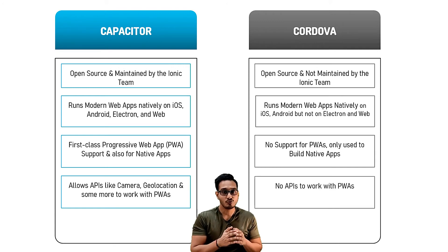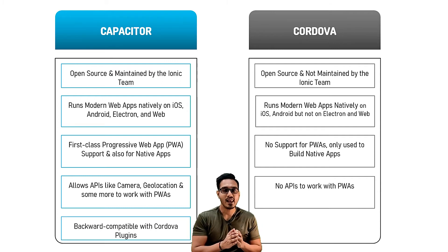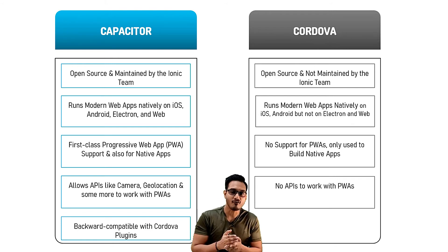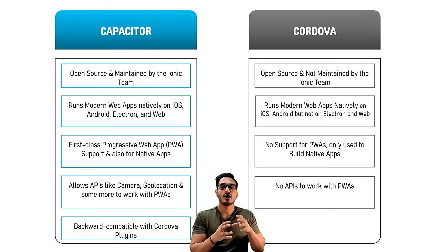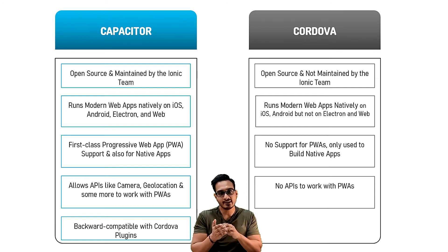Cordova does not support PWAs and provides no APIs for them. Another major benefit of Capacitor is its backward compatibility with Cordova plugins, which means we can use a whole range of existing Cordova plugins within Capacitor. Since Capacitor has fewer official plugins, this compatibility allows developers to supplement with Cordova community plugins.